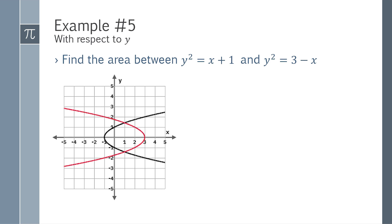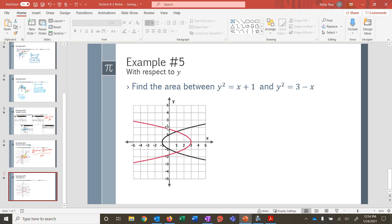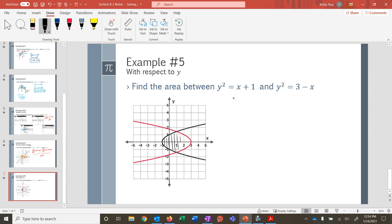What's typically the most challenging is dealing with respect to y. I want to find the area between y squared equals x plus 1 and y squared equals 3 minus x. And that's this region right here. But these aren't functions. And that's a big issue here.